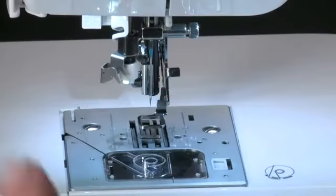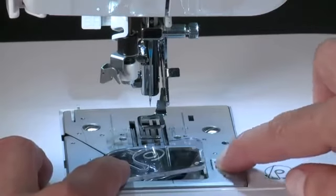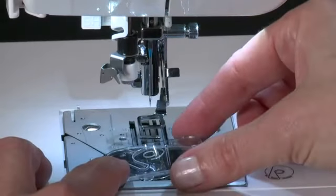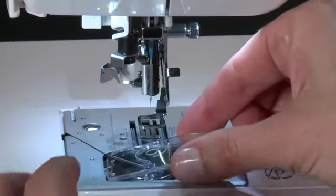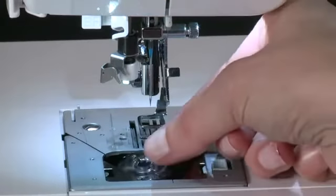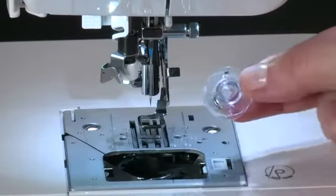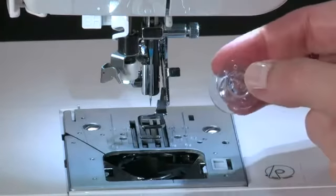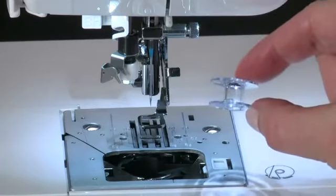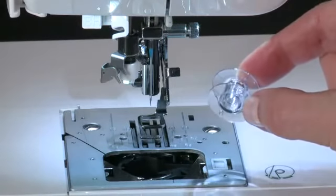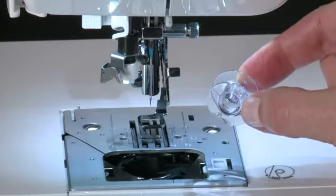Remove the bobbin cover plate by pushing the release button to the right, while pushing down on the bottom left corner of the plate. Then remove the cover. Your machine comes with a Class 15 J bobbin. It is recommended that you use only Class 15 J bobbins in your machine.